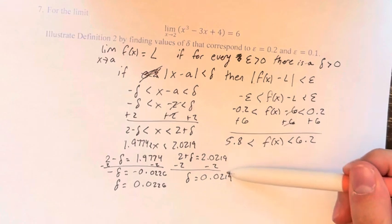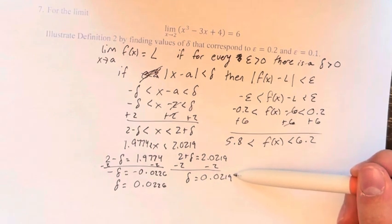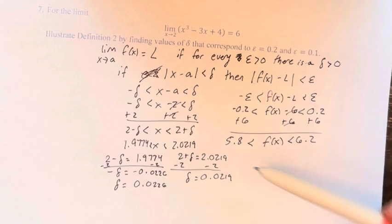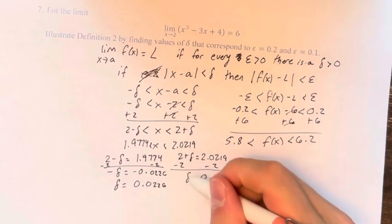We have to pick the more restrictive of the values. Because we know that if you go 0.0219 in one direction, then after that you're going to be in values that are invalid. So if you go 0.0226 in that direction, then you are going to get, necessarily because it's further, you're going to get invalid values. So you have to pick the more restrictive option.